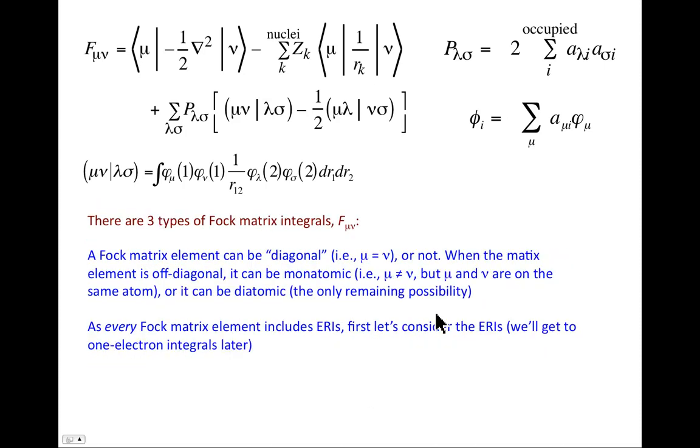Now what about the Fock matrix integrals? It's very helpful in thinking about semi-empirical approximations to recognize that there are two kinds—actually there's three kinds—of Fock matrix elements. There are so-called diagonal elements, where mu is equal to nu. The other elements are off-diagonal. When they are off-diagonal, when mu is not equal to nu, it may be either a monatomic term—you've got two different functions on the same nucleus—or it could be a diatomic term, so that you have two functions on two different nuclei.